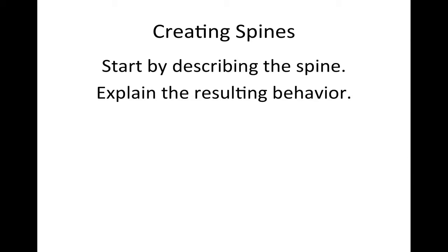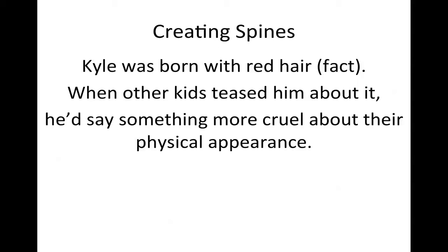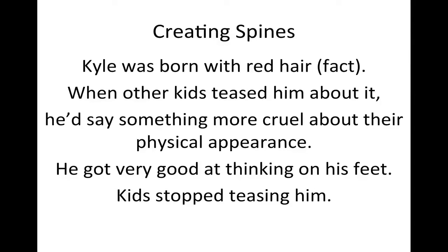When creating spines, it's really two parts — and this is the hardest thing for students to understand, just because it's so simple. First, you describe the spine — your fact, event, image, theme, or paradox. Then in the second part of the sentence, you state the behavior that results. For example: 'I was born with red hair. When other kids teased me about it, I'd say something more cruel about their appearance, and I got good at thinking on my feet until kids stopped teasing me.' That's a fact plus resulting behavior.